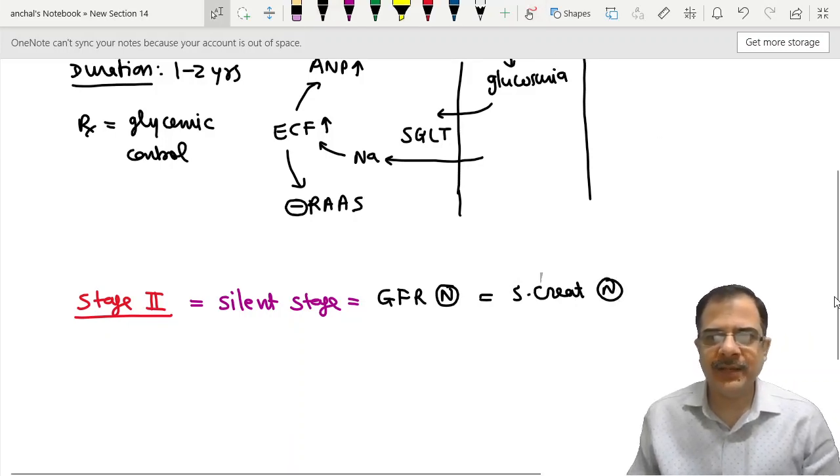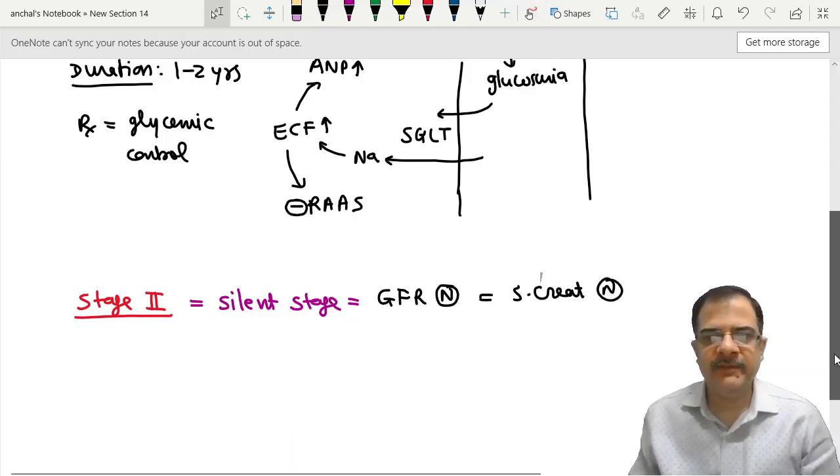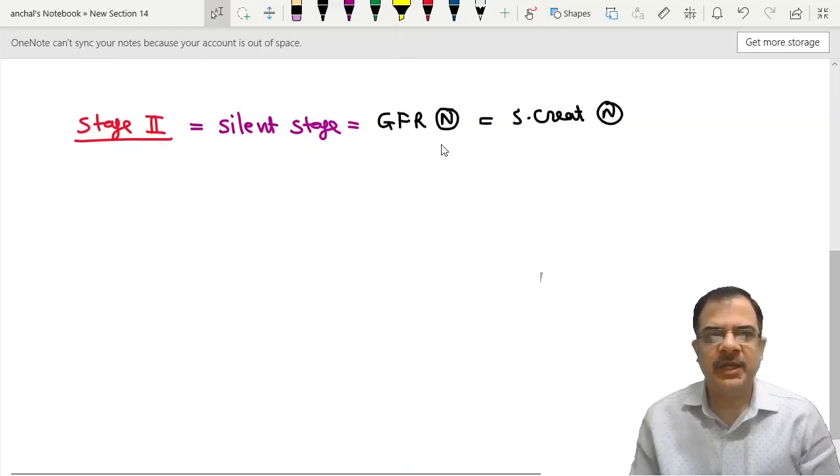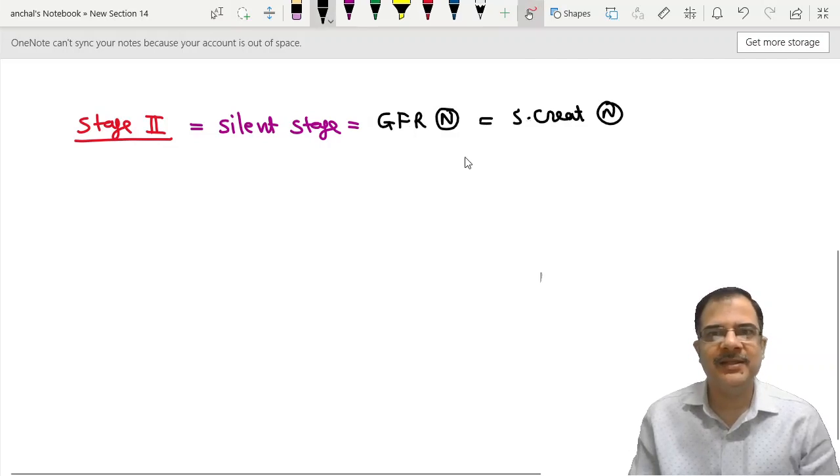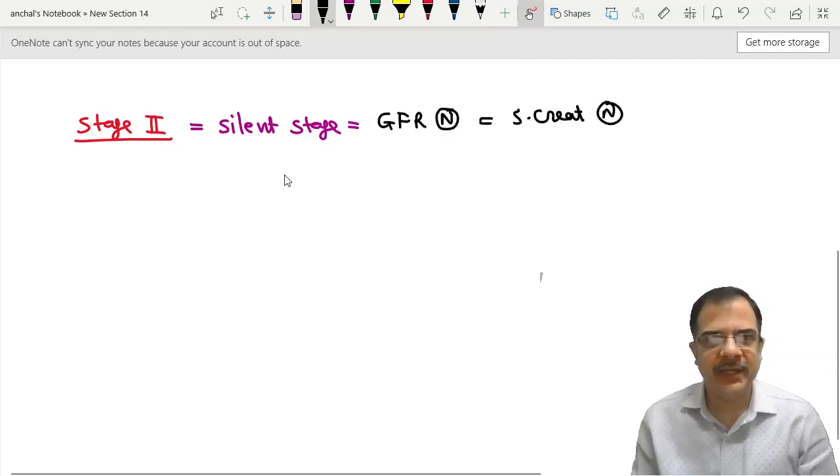This stage is diagnosed only when we have the previous report available with us. If the previous report is not available, it will not be diagnosed. Because in the previous report, the GFR was high, creatinine was low, then we can compare. Otherwise, we can't make a diagnosis here on a routine basis.